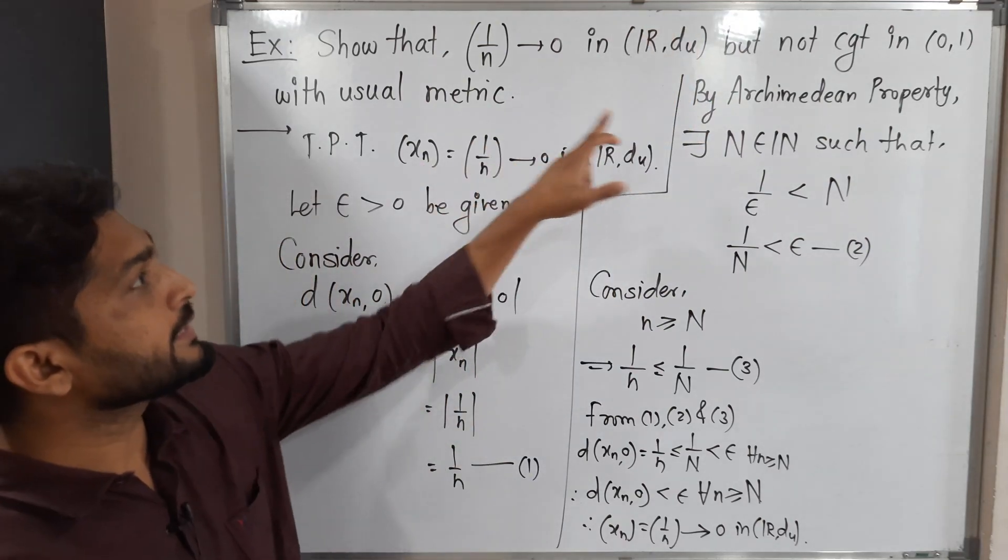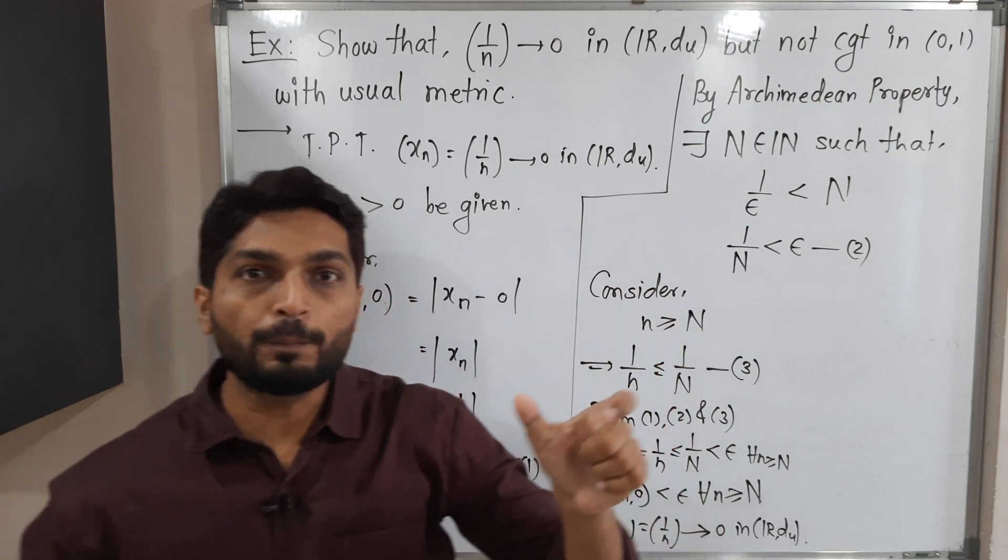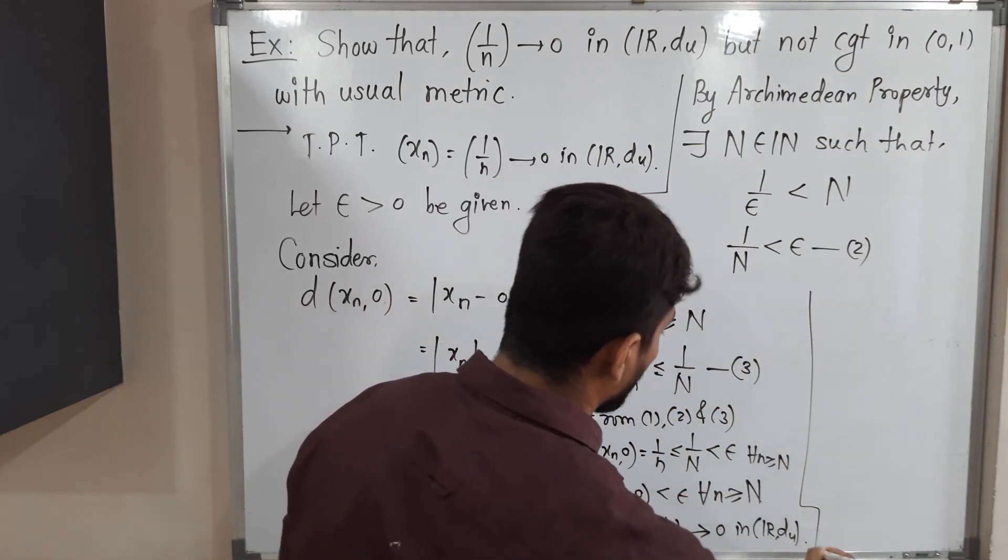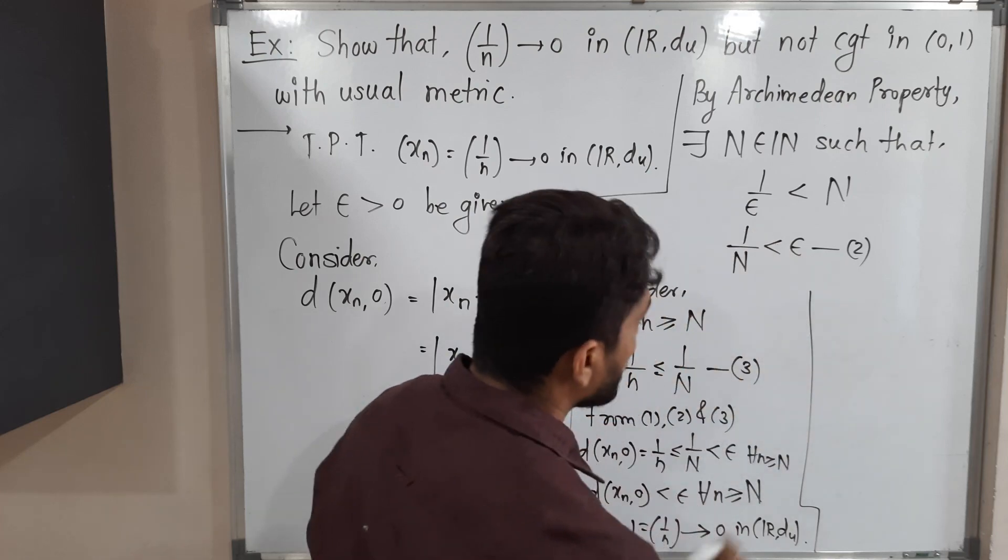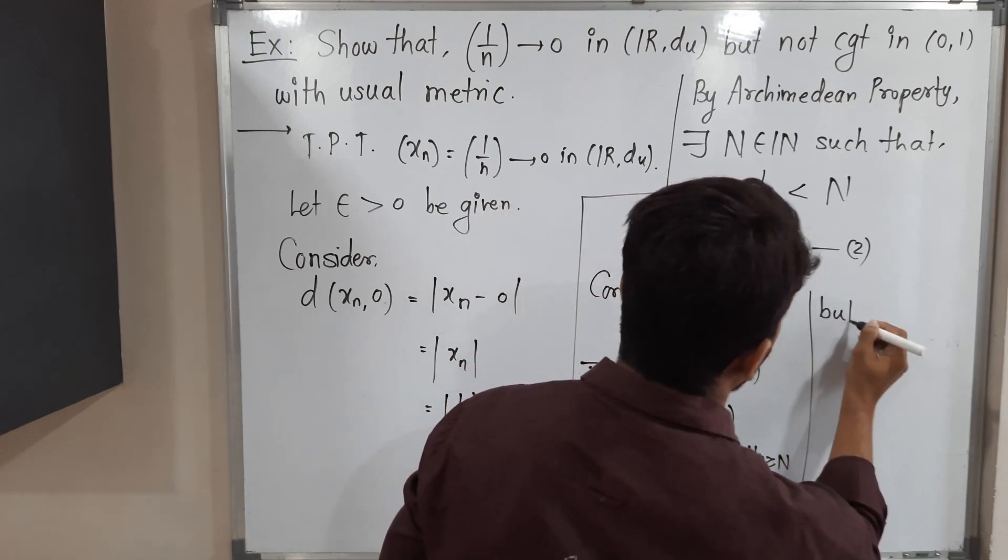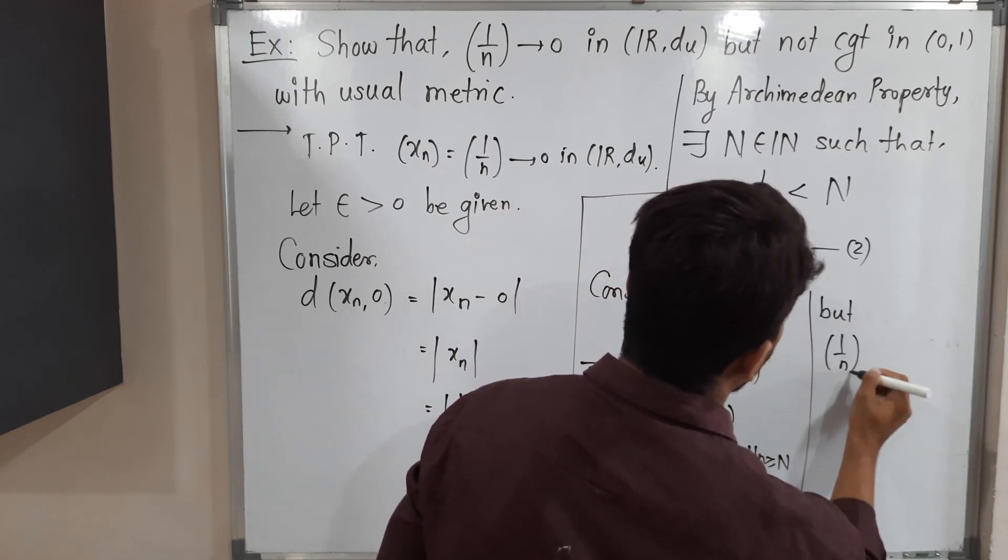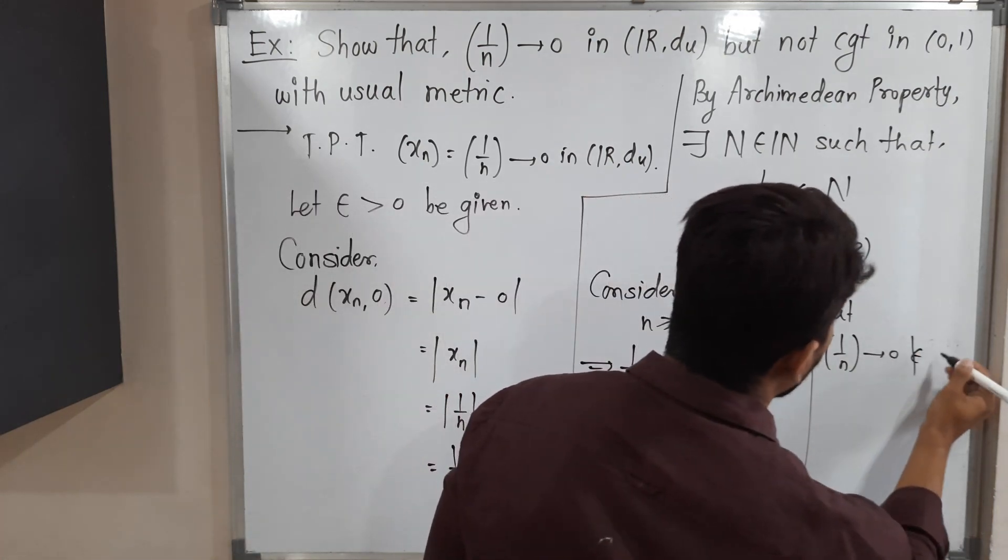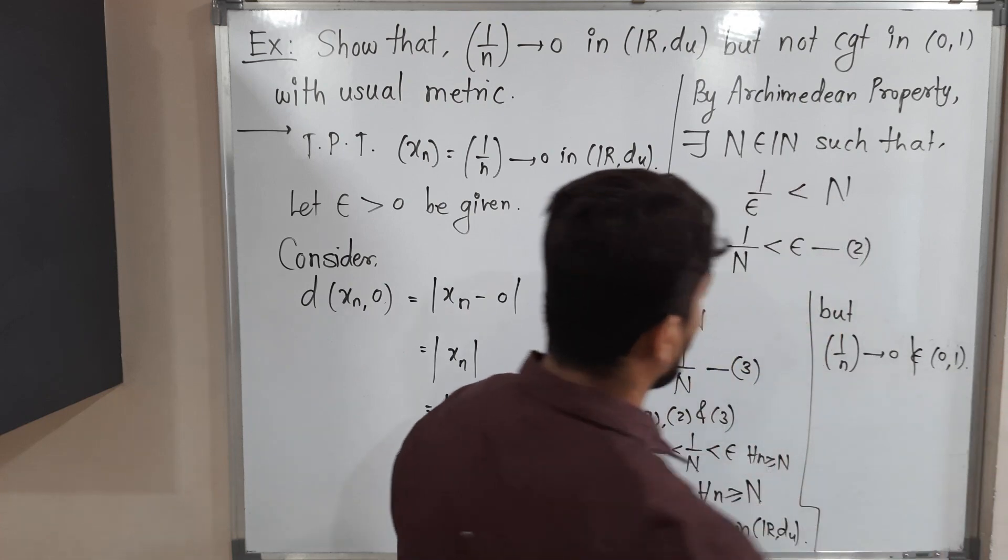Now we have to prove it is not convergent in that open interval (0,1) with same usual metric. But, that sequence 1 by n converges to 0. Just now we have proved. But 0 does not belong to open interval (0,1).